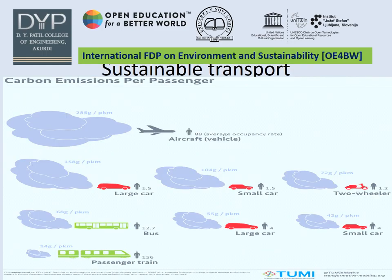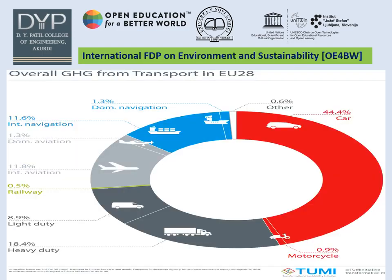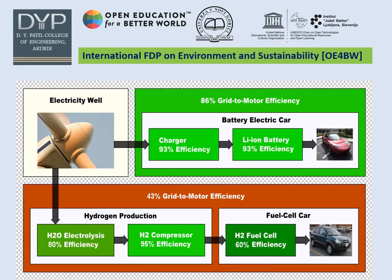For sustainable transport, carbon emissions per kilometer are: air travel 285g, large car 158g, small car 104g, two-wheeler 72g, buses 68g, large car (efficient) 55g, small car (efficient) 42g, and passenger train 40g. Looking at overall sector contributions to greenhouse gas emissions: cars 44.4%, motorcycles 0.9%, heavy-duty vehicles 18.4%, light-duty vehicles 8.9%, railways 0.5%, international aviation 11.8%, domestic air travel 1.6%, domestic navigation 1.3%, and others 6%.